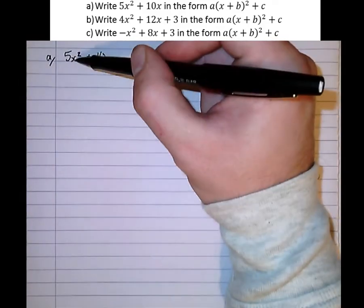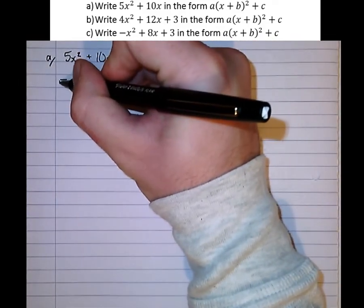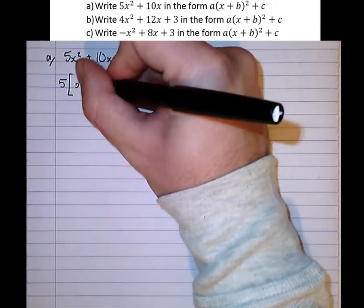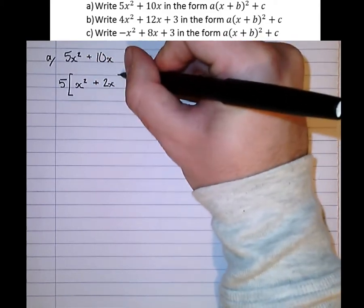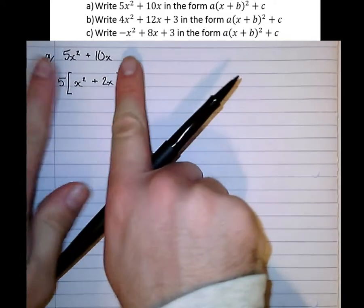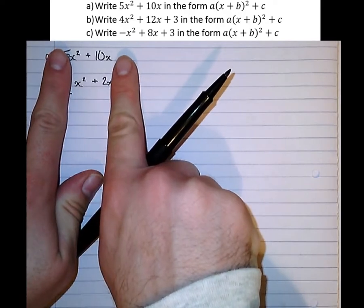Now we know how to do it for coefficients of 1, so let's try and make this x squared term have a coefficient of 1. Let's take out a factor of 5. That gives us x squared plus 2x in these factorised brackets. And now let's just ignore everything else other than those two terms here. They're the two terms that we need to complete the square.